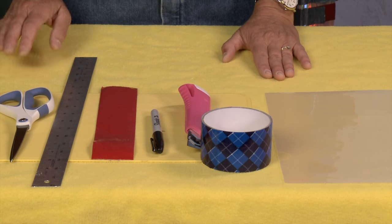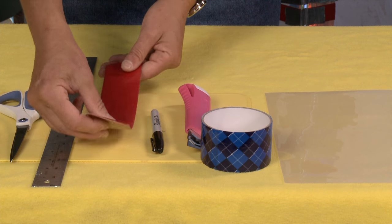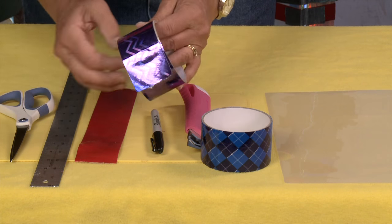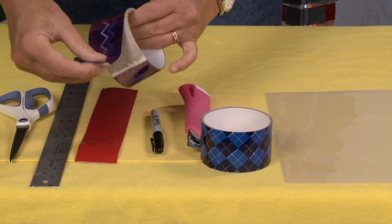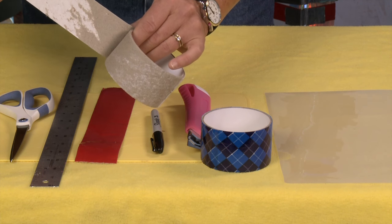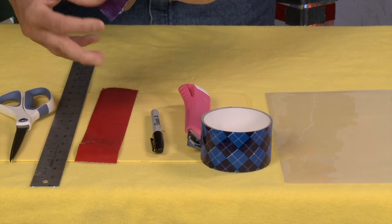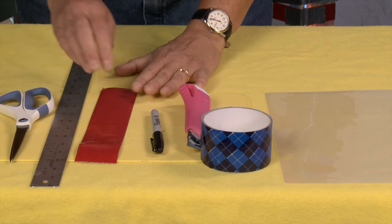So for this project I'm actually going to be using an end of the roll strip. Now if you don't know what an end of the roll strip is, it's when you get to the end of your duct tape you end up with this strip that has the paper backing on it and that's what I'm going to be using for this project.